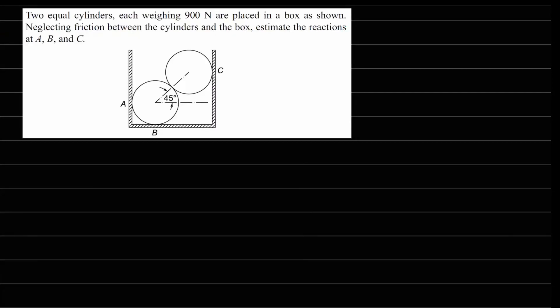This is problem number 1.9 from a textbook. It says two equal cylinders each weighing 900 Newtons are placed in a box as shown. Neglecting friction between the cylinders and the box, estimate the reactions at A, B, and C. Let's start by naming these cylinders: this one is cylinder number one and this one is cylinder number two. Since there is no friction, the only reactions on the cylinders come through contact.